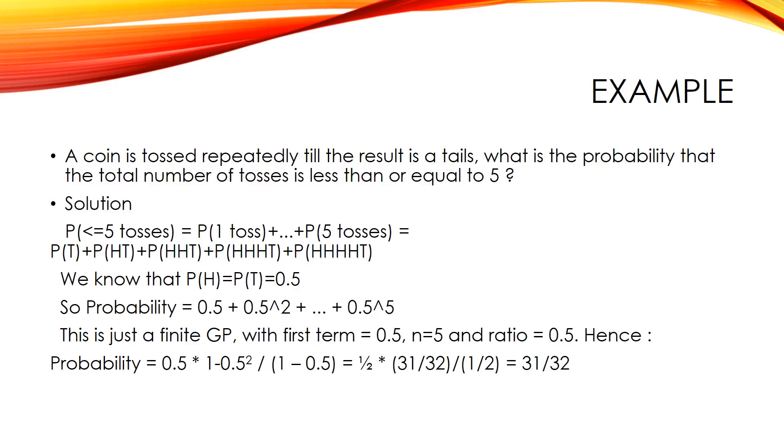This is just a finite GP with first term equals 0.5, n equals 5 and ratio equals 0.5. Hence, probability equals 0.5 into 1 minus 0.5 to the power 5 by 1 minus 0.5 equals half into 31 by 32 by 1 by 2 equals 31 by 32.